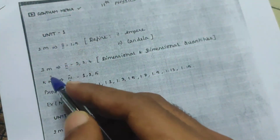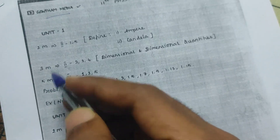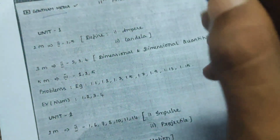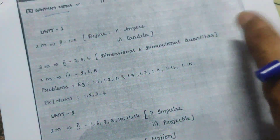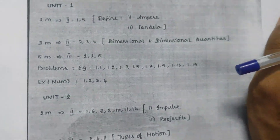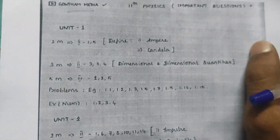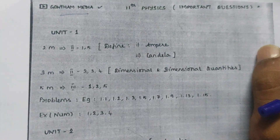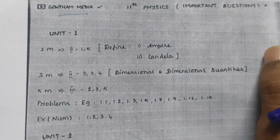Some questions are 2 marks, 3 marks, 5 marks. In this video we are going to explain the full right input. First of all it is unit one. 2 marks are listed below.